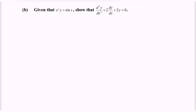Given the situation where e^x multiplied with y equals sin(x), we need to show that the second derivative plus 2 multiplied with the first derivative plus 2y equals 0. So, kindly focus on e^x multiplied with y equals sin(x).